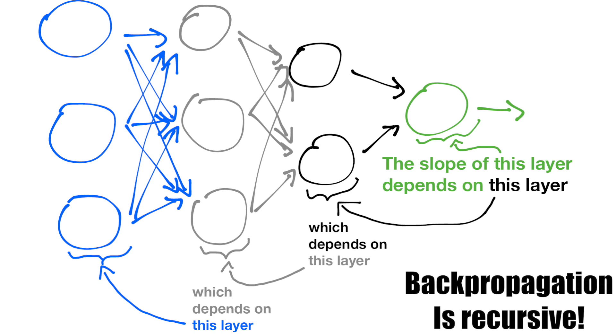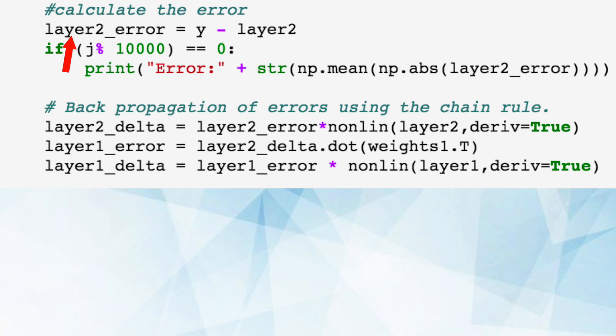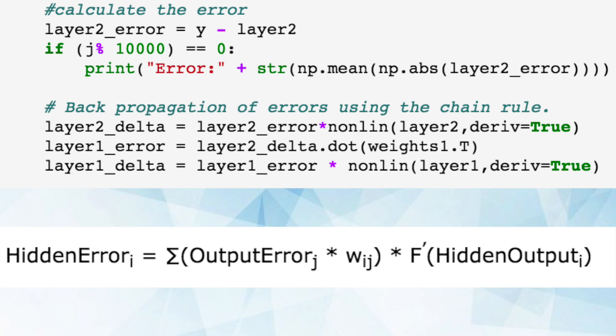We reuse multiple values as we compute the updates for weights that appear earlier and earlier in the network. After we have the error for the output layer we calculate an error for each neuron in the hidden layers going backwards layer by layer. The error for a neuron in a hidden layer is the sum of the products between the errors of the neurons in the next layer and the weights of the connections to those neurons multiplied by the derivative of the activation function.